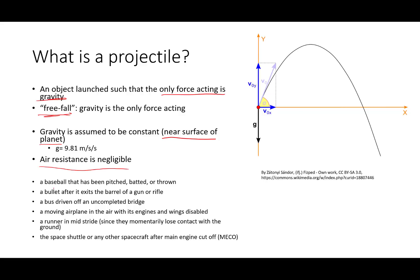A few examples of projectiles are baseballs that have been pitched, batted, or thrown; a bullet that's been fired after it's left the barrel of the gun; a bus driven off of a bridge; an airplane moving in the air with its engines and wings disabled; and a runner in mid-stride, that is when they're momentarily out of contact with the ground. Really anything is a projectile if it's moving through the air and the only force acting on it is gravity.